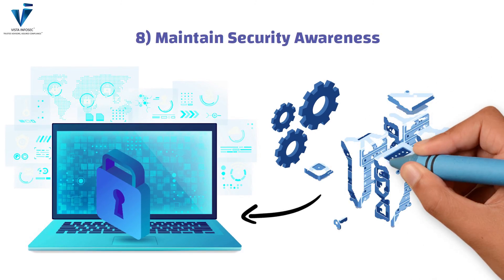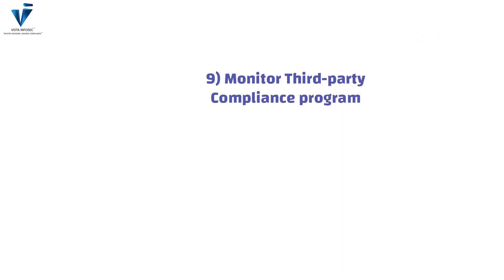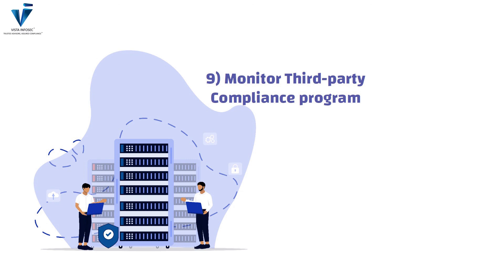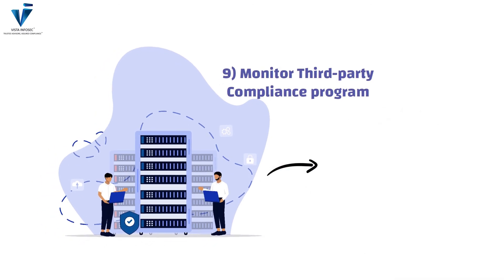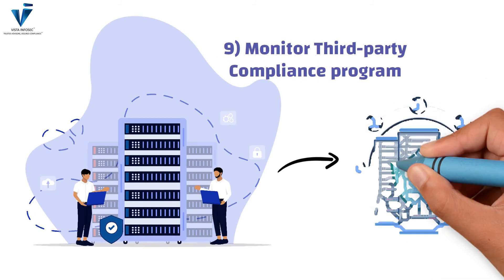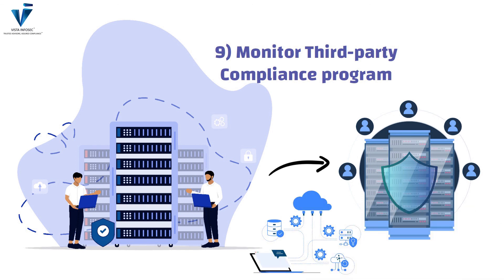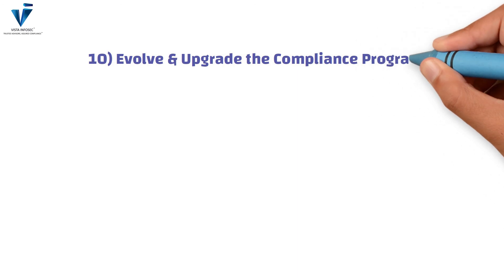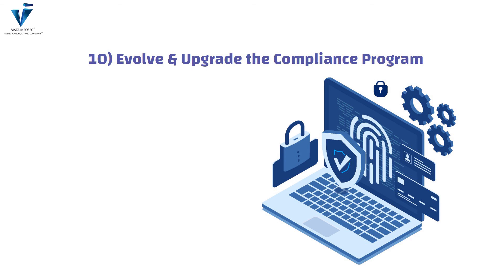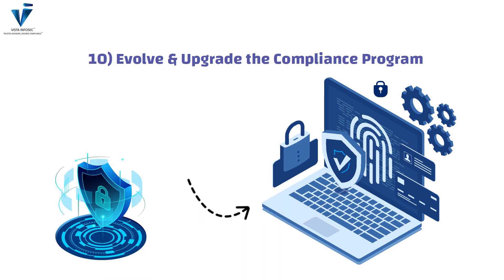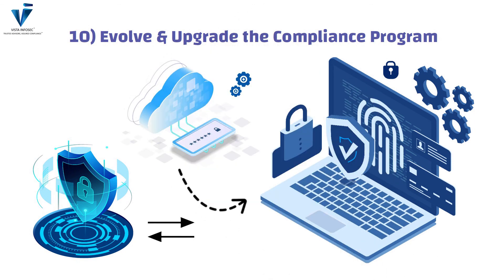Regularly conducting security awareness programs to educate employees is crucial. Another best practice is monitoring the third-party compliance program. Third-party service providers are equally responsible for the implementation and maintenance of security controls to meet PCI DSS requirements. Defining the roles and responsibilities of third parties is essential for maintaining compliance. Finally, organizations should evolve and upgrade their compliance program by regularly reviewing and upgrading it to meet growing requirements and deal with the evolving threat landscape, by monitoring program effectiveness and upgrading as per the evolving market scenario.